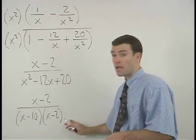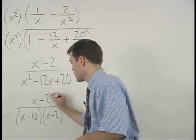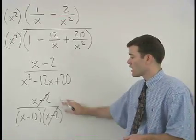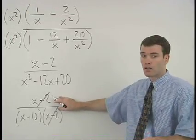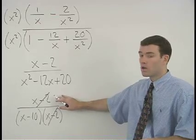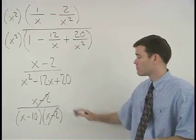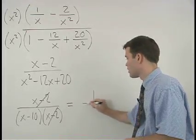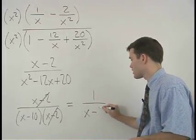So our x minus 2's cancel. And remember that when the numerator cancels out entirely, we leave a 1 in the numerator of our answer. So we have 1 over x minus 10.